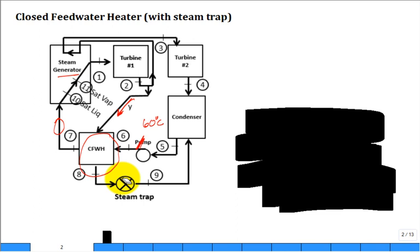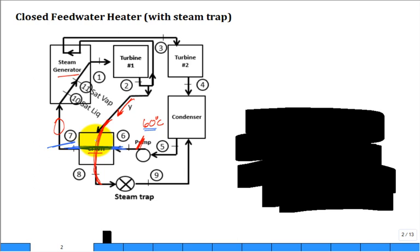In a closed feed water heater, the fluids don't mix. There's a hot fluid stream (drawn in red) that continues through the heat exchanger, and a colder fluid stream that gains heat — going in at maybe 60°C and coming out warmer at state 7. Heat transfers from the hot stream to the cold stream. There are two inlets and two outlets. The hot-side fluid must be returned to the cycle — not lost to the environment — so it's passed through a steam trap and dumped into the condenser.